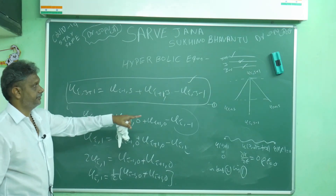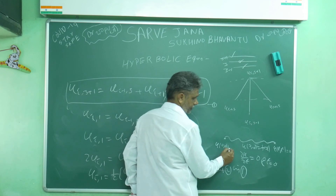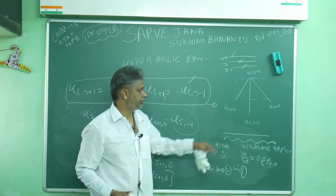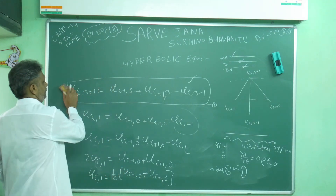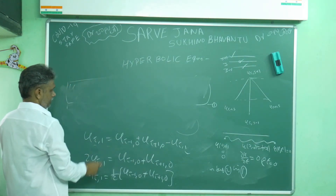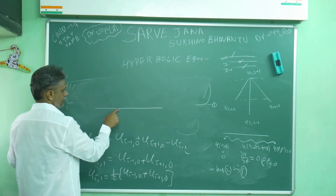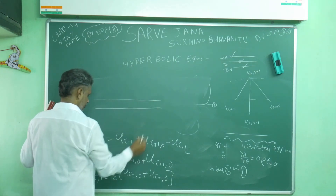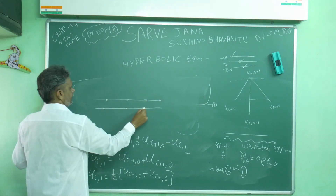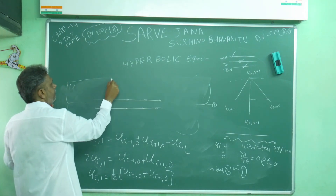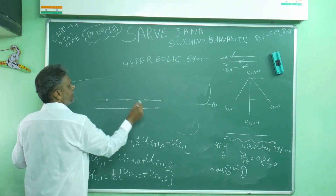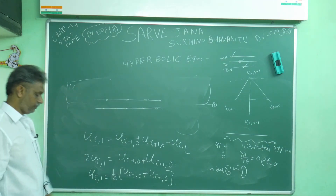For j = 0, the initial boundary conditions are known. Using those, we can compute all j = 1 values with this formula. Once both rows j = 0 and j = 1 are available, the main formula gives all subsequent rows. You always need two rows to proceed.